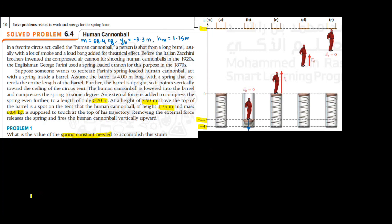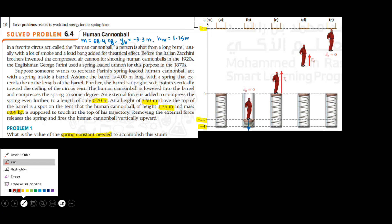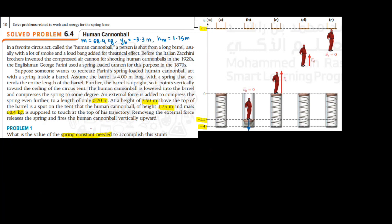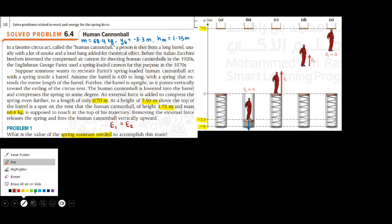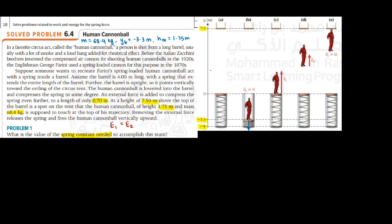We are going to use the law of conservation of energy to solve this problem. The law of conservation of energy says that if you have any two points in motion, the total energy at those two points is always equal. So if I have point 1 and 2, total energy at 1 will be equal to total energy at 2. For our question, I am going to select those two points as B and E, and we will write total energy at B equals total mechanical energy at E.